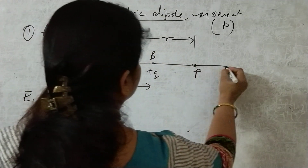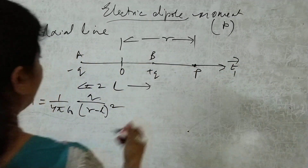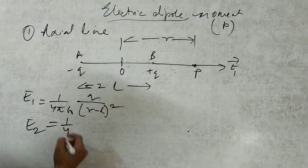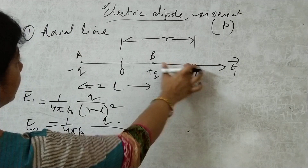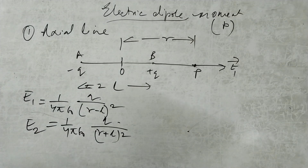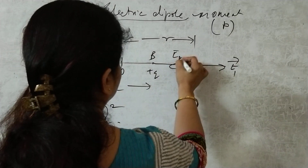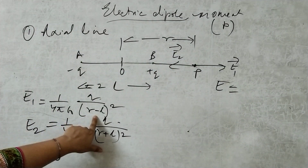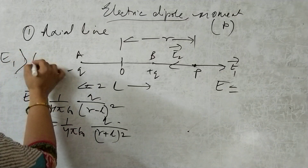The electric field intensity E2 at P due to the minus q charge is 1 over 4π epsilon-0, times q divided by (r plus l) squared. Its direction is toward the negative charge. Since the denominator of E1 is smaller, the magnitude of E1 is greater than that of E2.